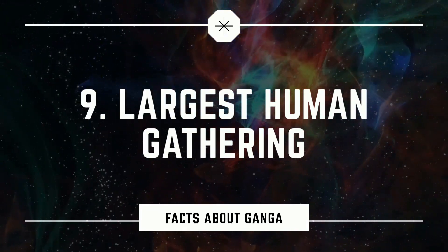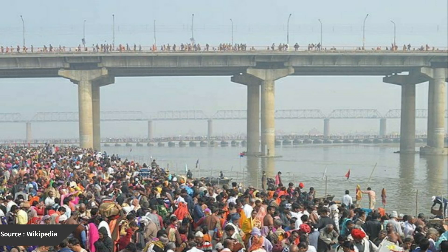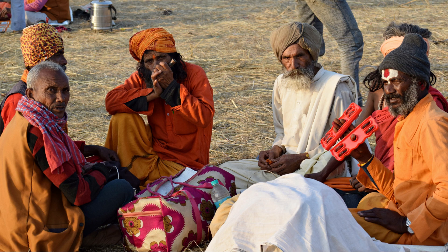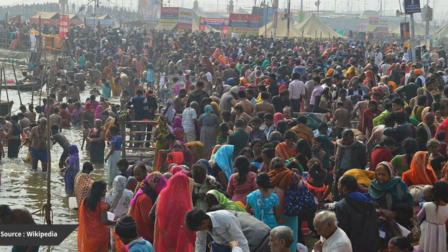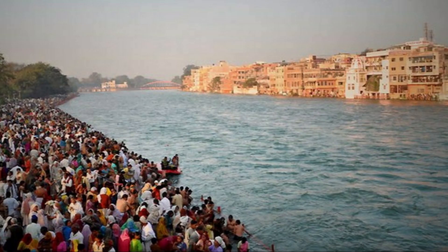The river is the location of the extraordinary Kumbha Mela ritual, which dates back to at least the 7th century and is now held every three years. Hindu pilgrims of all social statuses perform a ritual bathing in the river, which is thought to purify body and soul, wash away karma, and bring good fortune. The event involves 70 to 100 million people and can claim to be the largest human gathering in history.